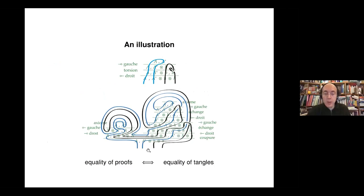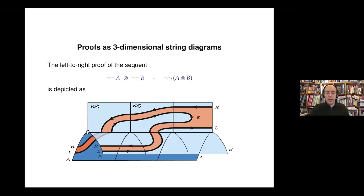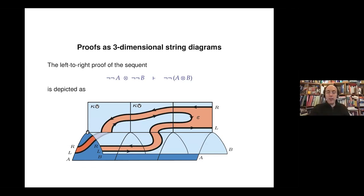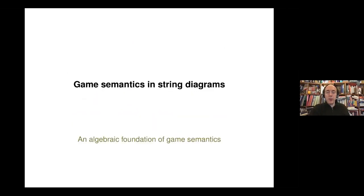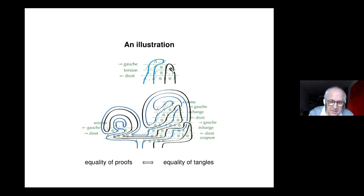These tangles represent the flow of negations in the dialogue between opponent and player. Recall the interaction between prover and refuter at the very beginning — these tangles can be understood as little strategies where the opponent asks a question and the player answers. There is an interesting relationship worth exploring further between proofs and topology.